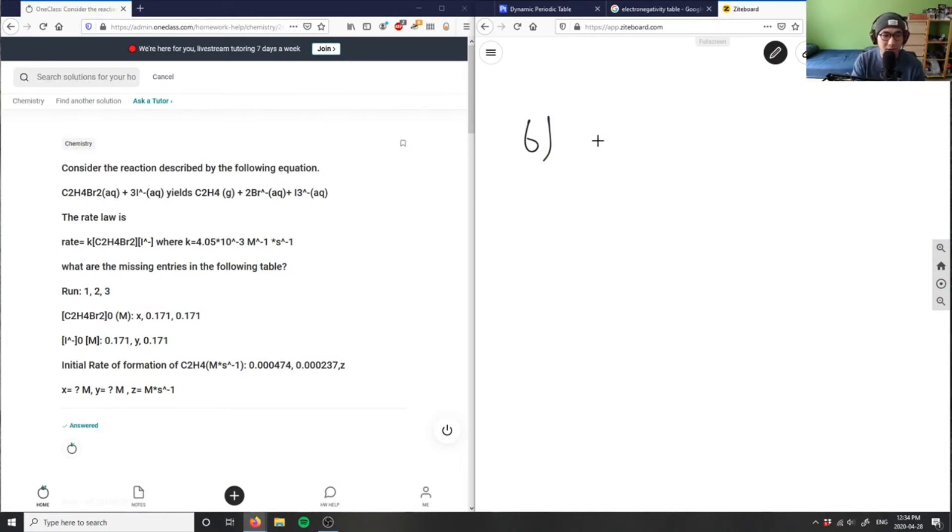This is the reaction described by the following equation. We have C2H4Br2 in aqueous solution plus 3I minus. It's going to yield C2H4 gas plus 2Br minus plus I3 minus triiodide. This is all in the aqueous state here.